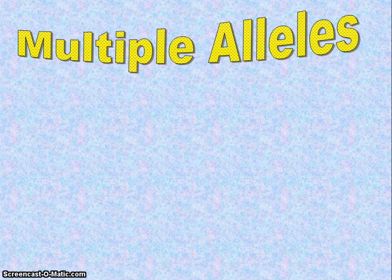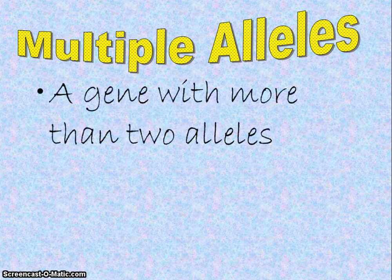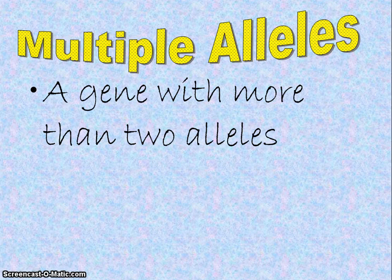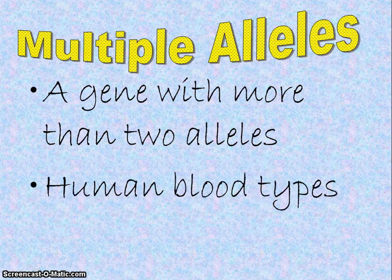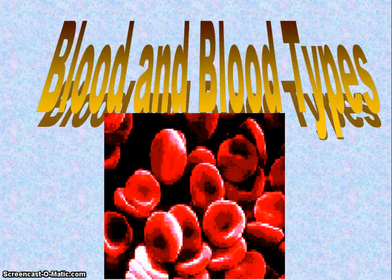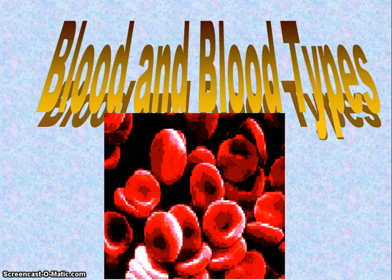Along with blood typing is something called multiple alleles. This is a gene that has more than two alleles, like our human blood types. We have an allele for A, B, and O. We will talk a little bit more about that when we talk about blood and blood types.